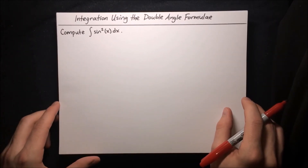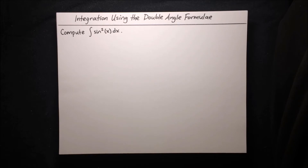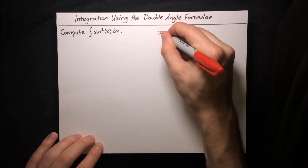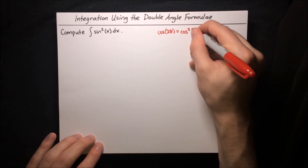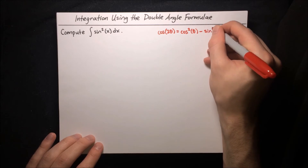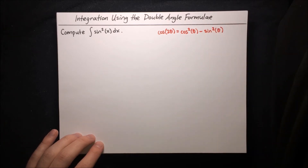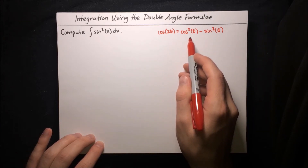Here's our next integral: the integral of sine squared x. It's not clear how to do this by substitution. We can't use the sine double angle formula because we don't have a sine cosine term, and we can't use the cosine double angle formula directly because we don't have a cosine squared minus sine squared term. But actually, we can rearrange it. We know the cosine double angle formula: cosine of 2θ equals cosine squared of θ minus sine squared of θ, and we don't have a cosine squared term here.